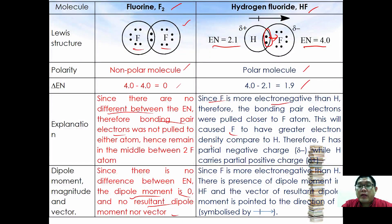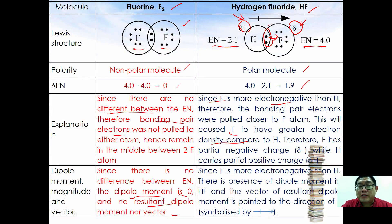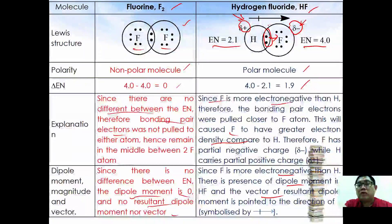Because fluorine has greater electron density, it bears a partial negative charge, as if it wants to accept electrons. Hydrogen, as if donating electrons to fluorine, bears a partial positive charge. Since fluorine is more electronegative, a dipole moment is present in HF and the resultant force vector points in the direction of fluorine — the more electronegative atom. This is represented by an arrow pointing toward fluorine.